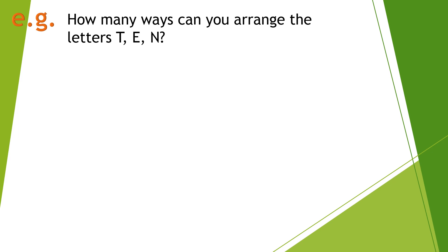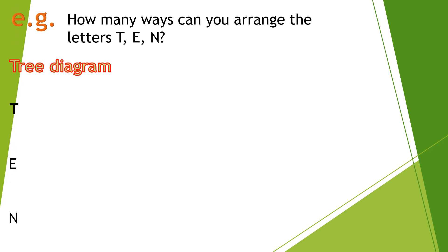There are 3 different ways for us to determine the number of ways to arrange the letters T, E, N. Basically, we may use tree diagrams. So using a tree diagram, first we list down all of those elements. So we have T, E, and N.